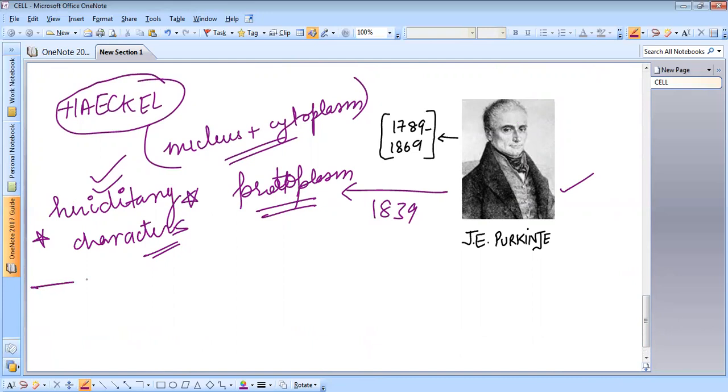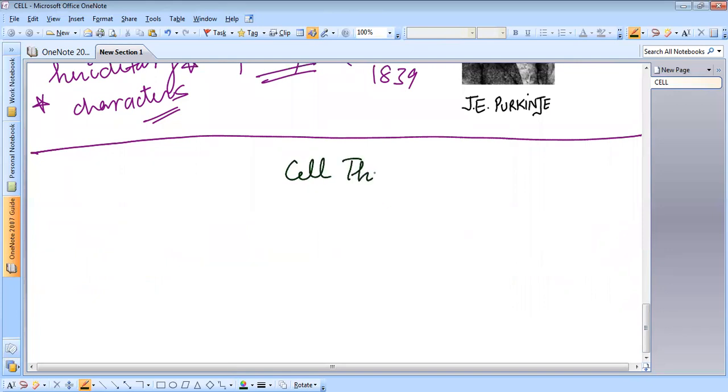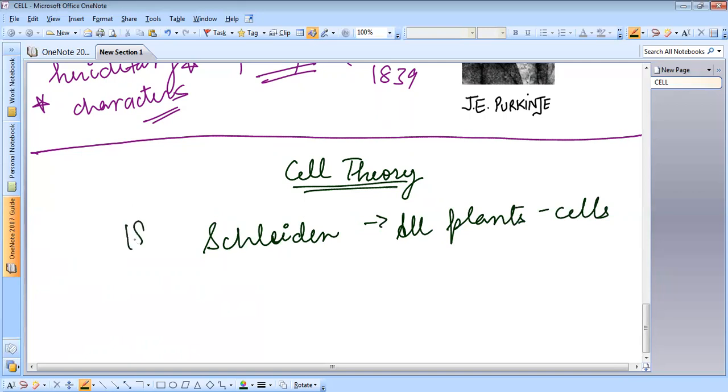Next, we talk about the cell theory. So, now that cell is discovered, we know some basic features of a cell and life. So, now we talk about the cell theory. In 1838, Jacob Matthias Schleiden. He was a German botanist and he proposed the idea that all plants consist of cells. All plants consist of cells. Schleiden told us this in 1838.